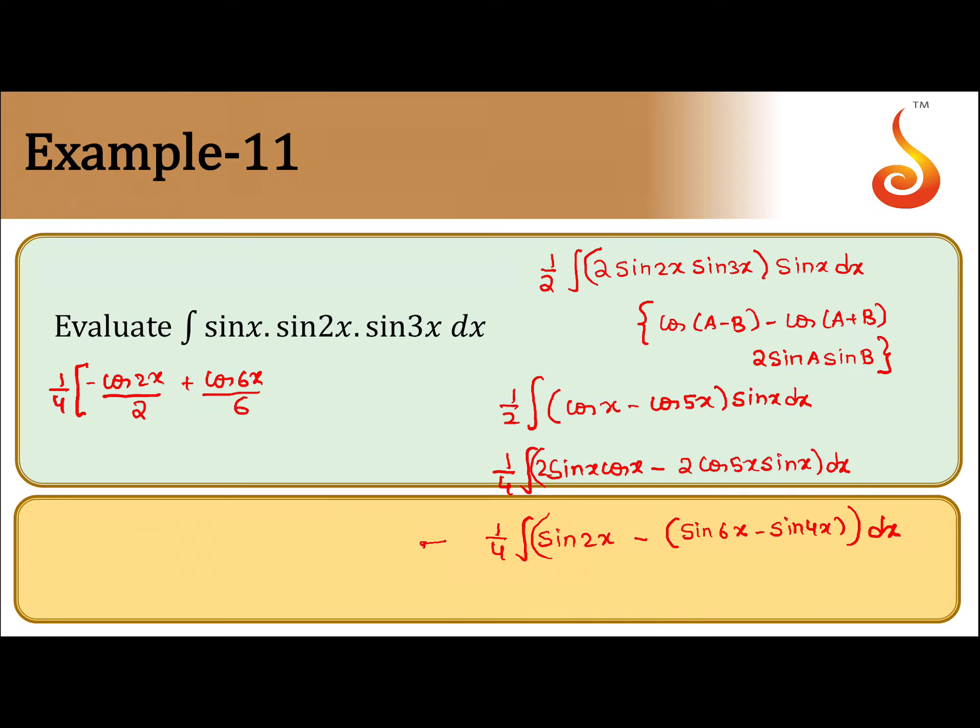So integral of sin 2x will be minus cos 2x by 2. Integral of sin 6x will be minus cos 6x by 6, so minus minus becomes plus, it becomes cos. Similarly sin 4x integral is minus cos 4x, and minus minus becomes plus. One more minus automatically you get as final answer.